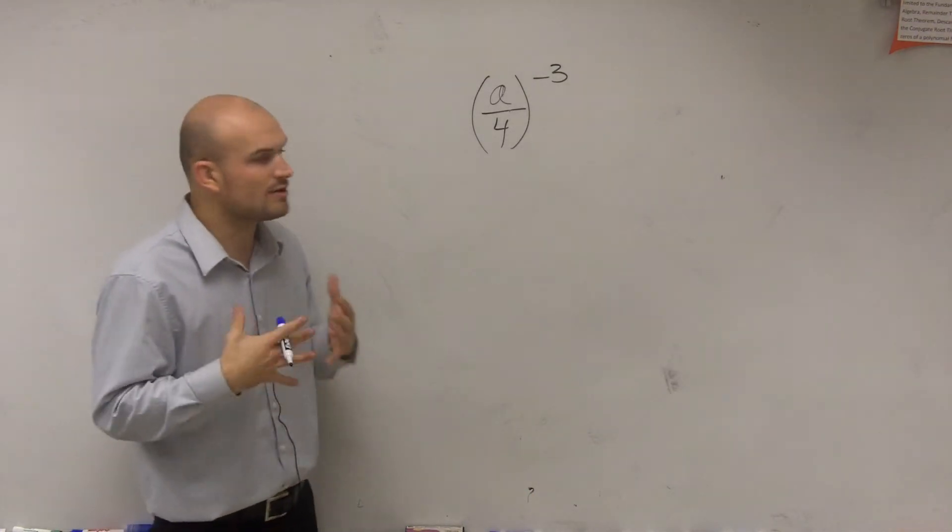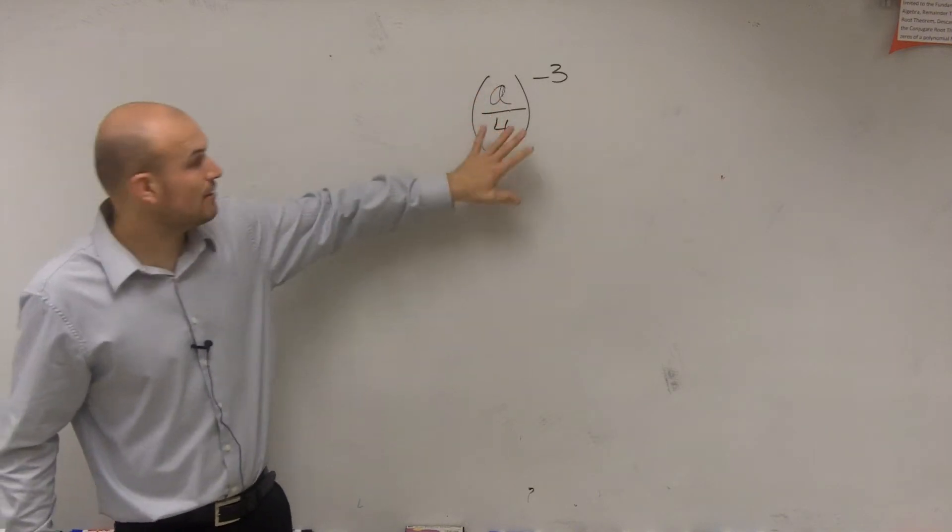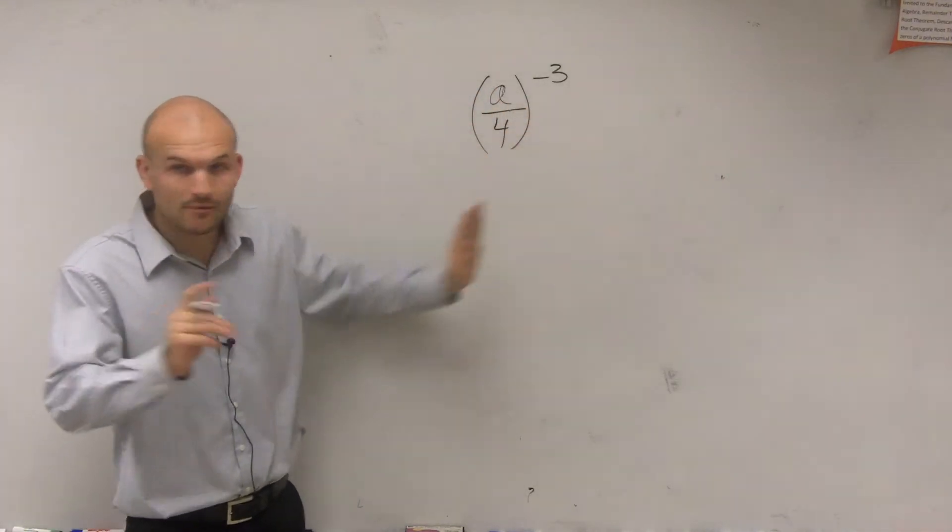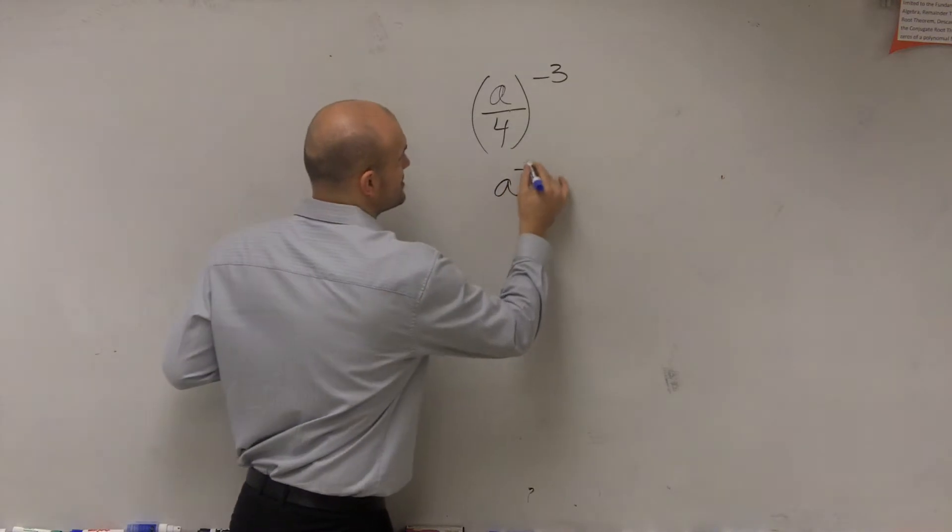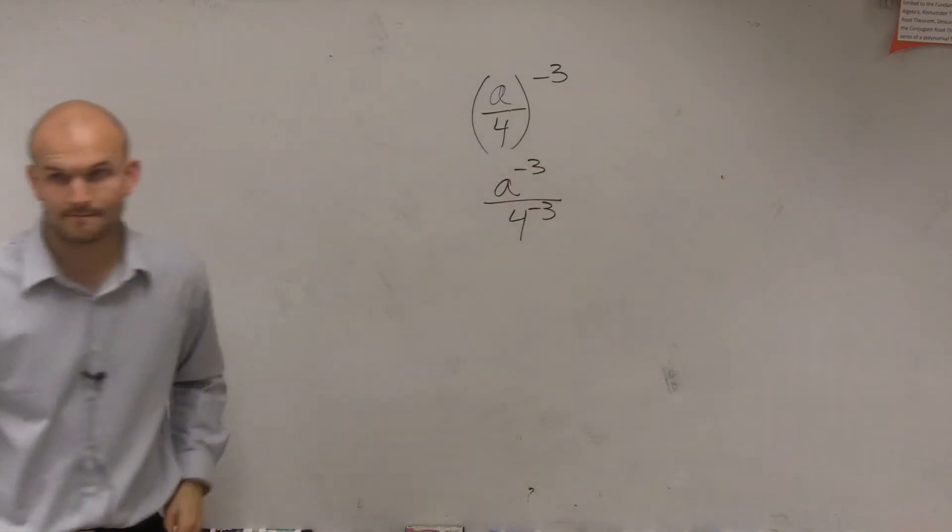The power of quotient property states that when you have a quotient raised to an exponent, that's equivalent to a to the negative third divided by 4 to the negative third.